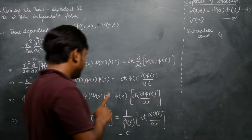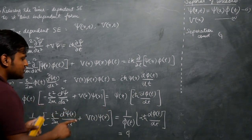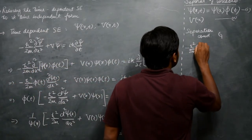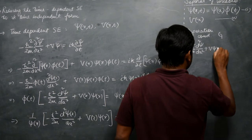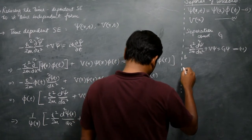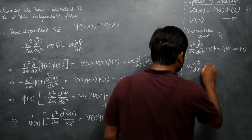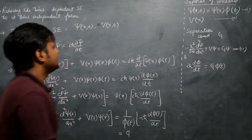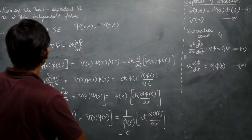Using this separation constant g, I can separate the entire equation into two different equations. Equation 3: −(ℏ²/2m)(d²ψ/dx²) + Vψ = gψ. Equation 4: iℏ(dφ/dt) = gφ(t).